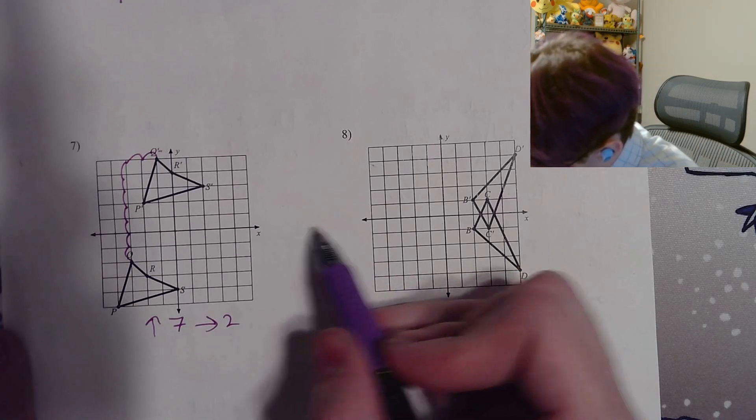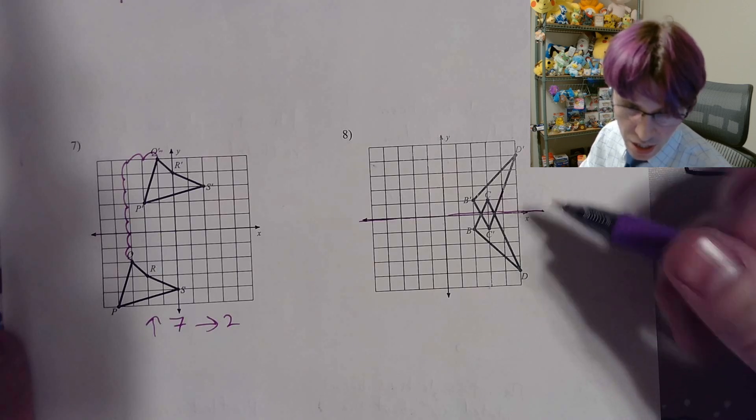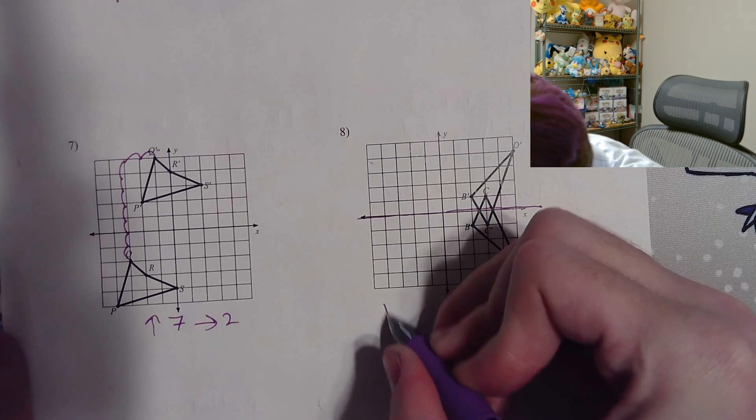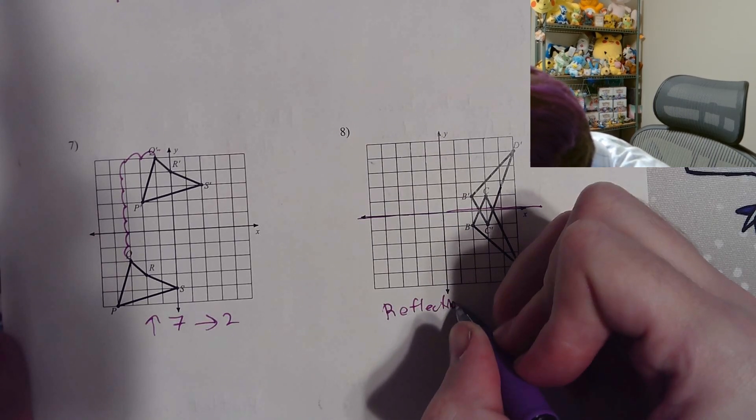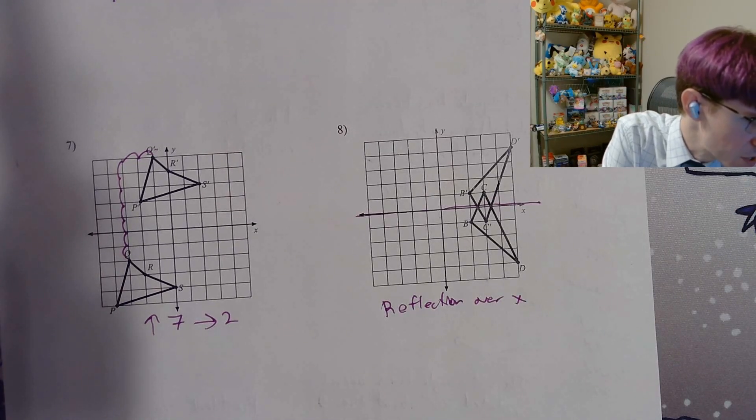And on the last one here, this one's going to be, this is the line that you're reflecting it over. It's kind of weird to see because it flips over on top of itself. You're allowed to do that. This one's going to be a reflection over X. And I'm done talking. Have a great rest of your day, guys. Peace out.